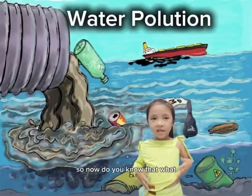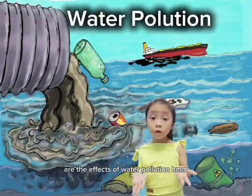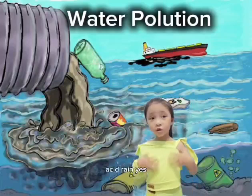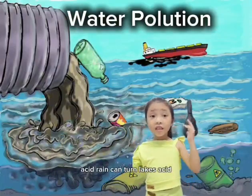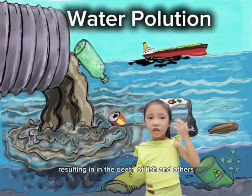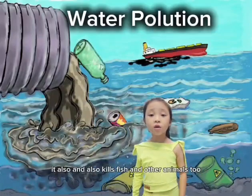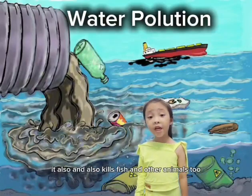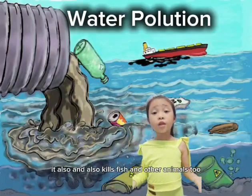Do you know what the effects of water pollution are? Acid rain. Acid rain can turn lakes acidic, resulting in the death of fish and others. It also kills fish and other animals too.